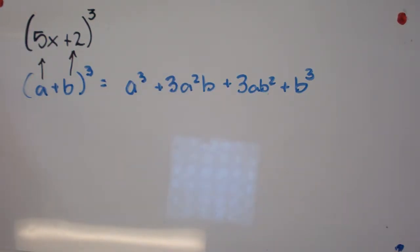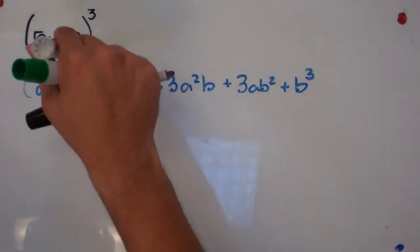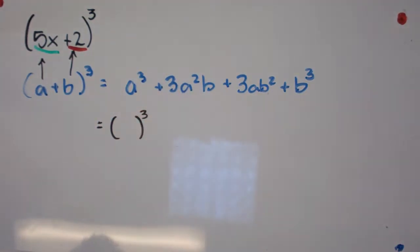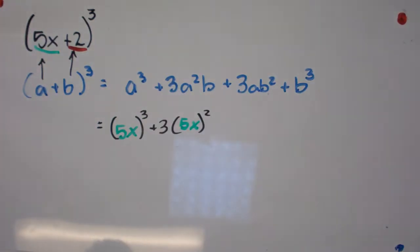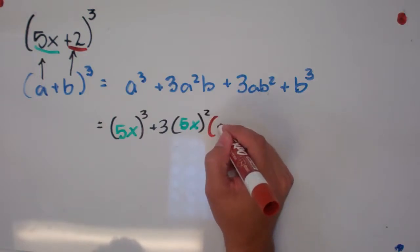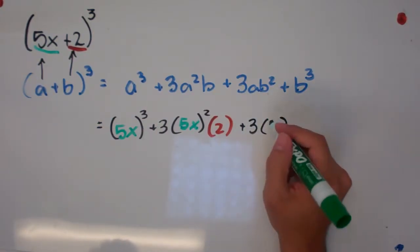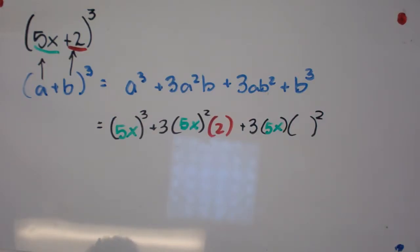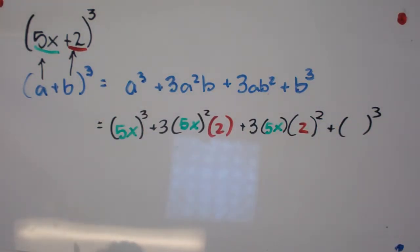We're going to plug those values in — I'll write a, which is five x, in green, and b, which is two, in brown. Substituting: instead of a cubed we write five x cubed; the a squared term gives us three times five x squared times two; then three times five x times two squared; and finally two cubed.